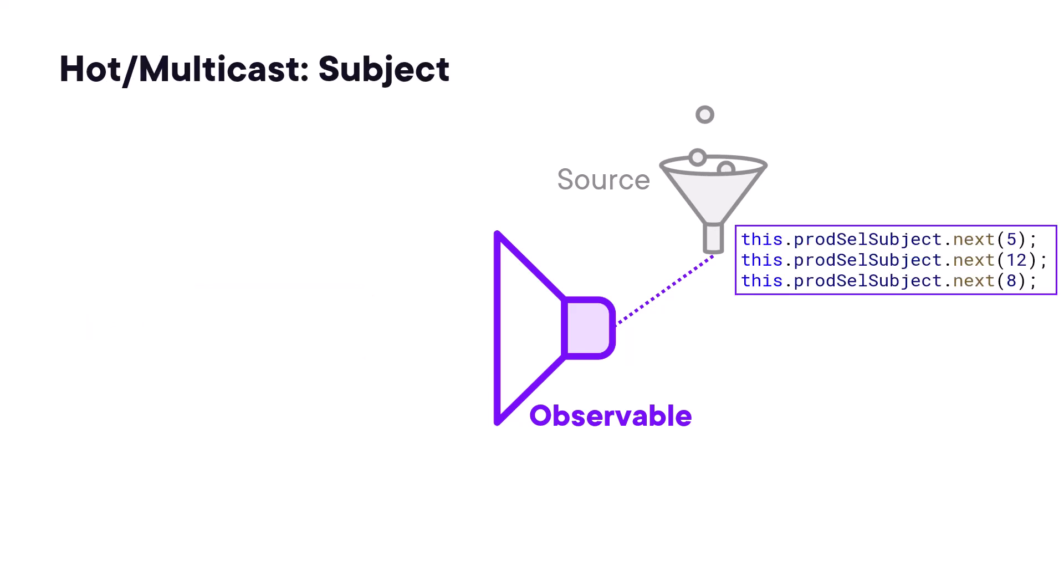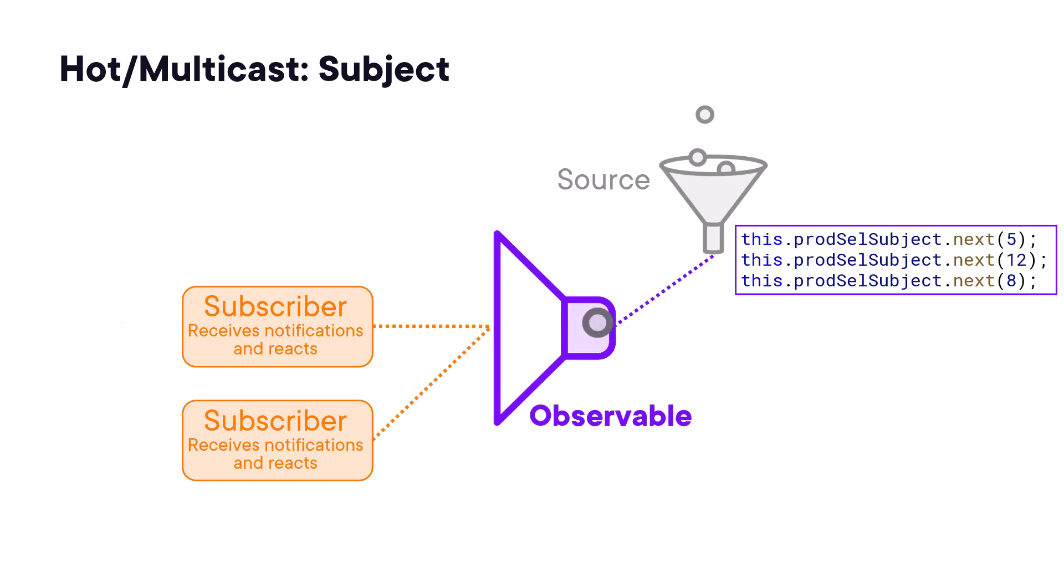And here is a hot multicast observable. This subject immediately starts emitting notifications with the defined data, even though there are no subscribers. When our code does subscribe, it receives the next emission. Any prior emitted values are just lost. There were no subscribers yet to react to them. Any later subscribers receive the next emission, and all subscribers receive the same emission.